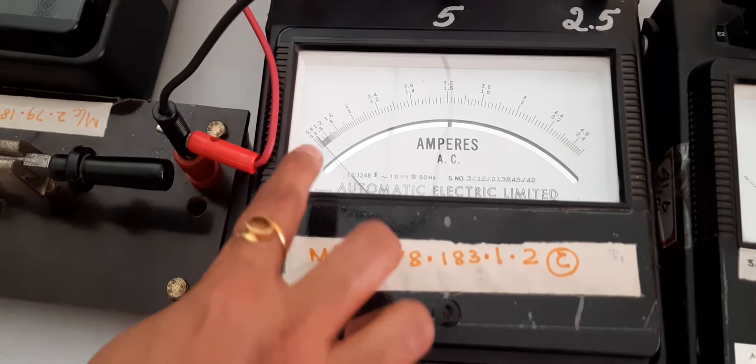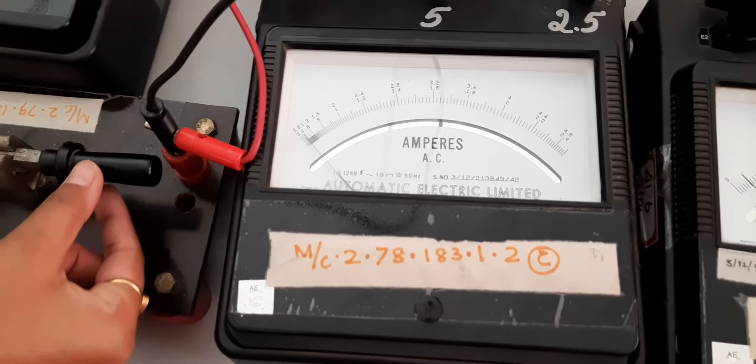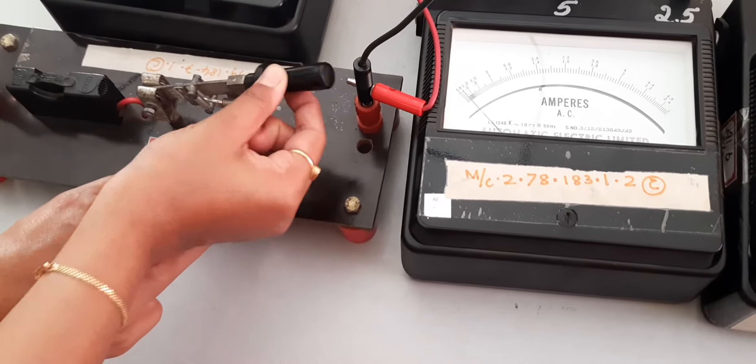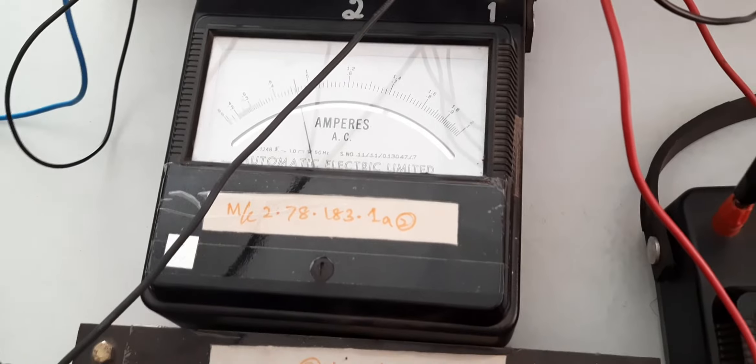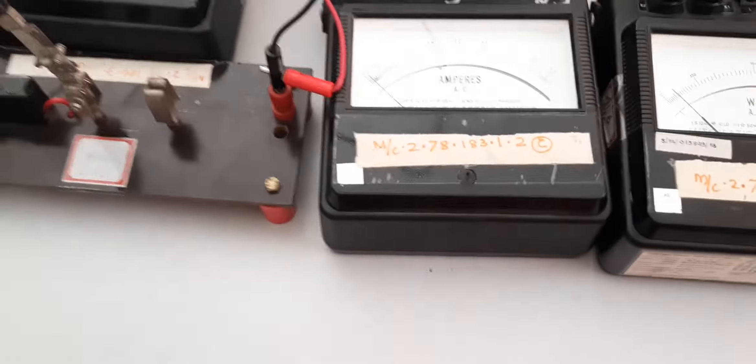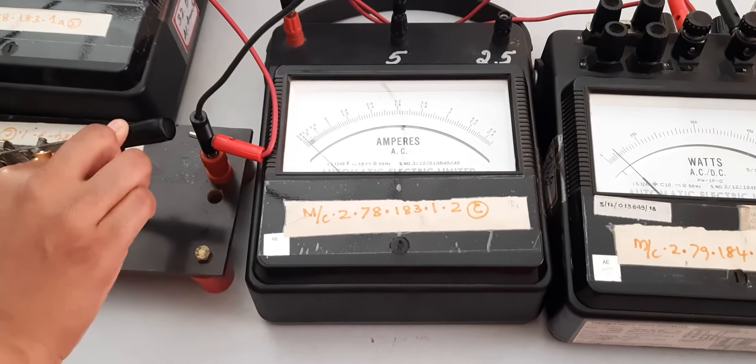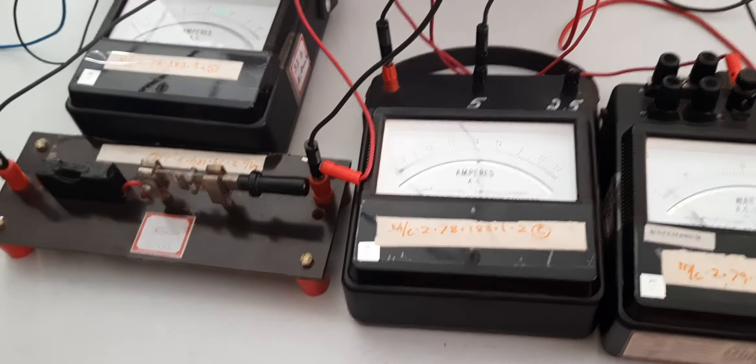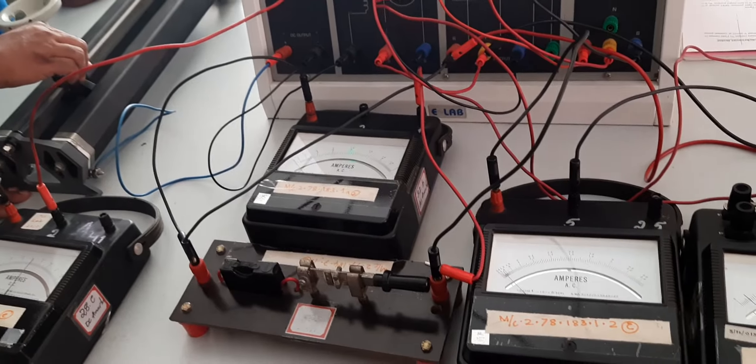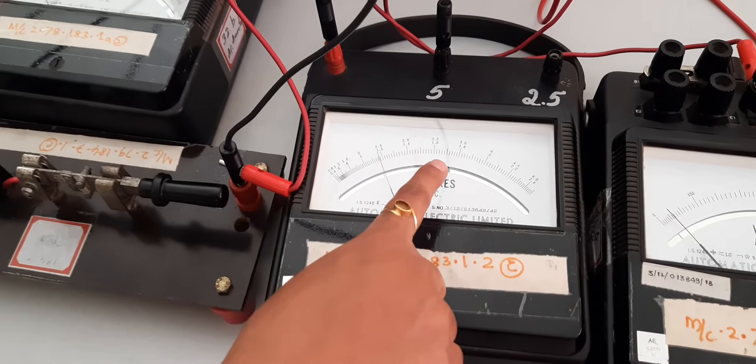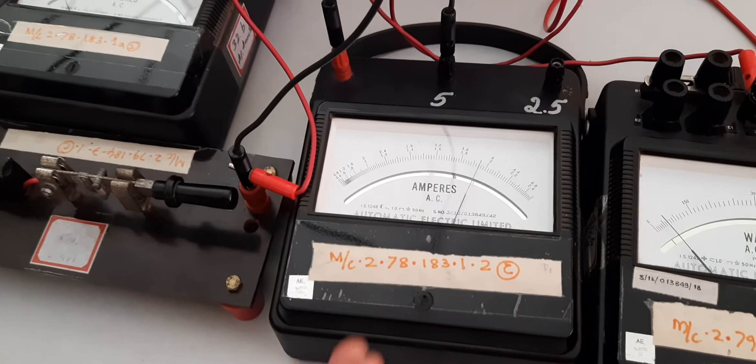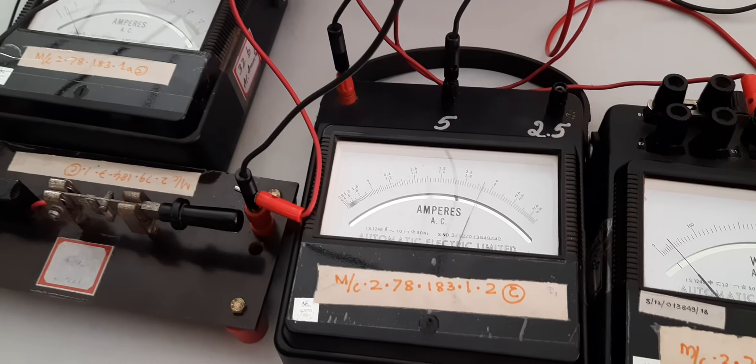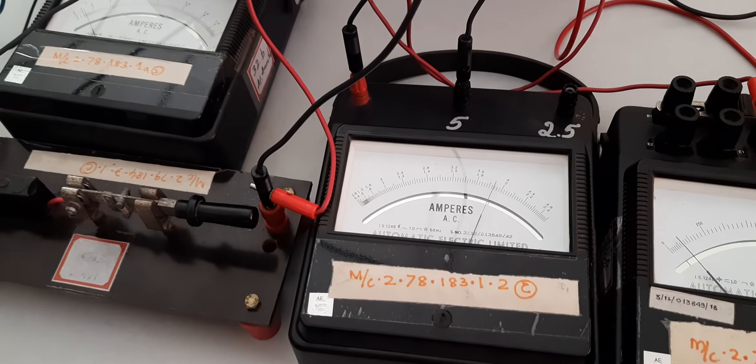So we will open this switch. Now the minimum current reading is taken from this ammeter. This ammeter will give you the minimum current reading. We will close this SPS switch. Again the field current is increased and we can see that the armature current is increasing. So corresponding readings have to be taken in each step. So now once all the readings have been taken.